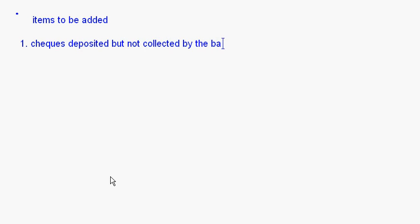Let's understand this. Suppose you have ten thousand rupees overdraft balance and you deposit some checks — that reduces the overdraft balance in the cash book. But those checks have not been collected by the bank, so the bank's overdraft balance is still higher compared to the cash book. Therefore, this amount is to be added.